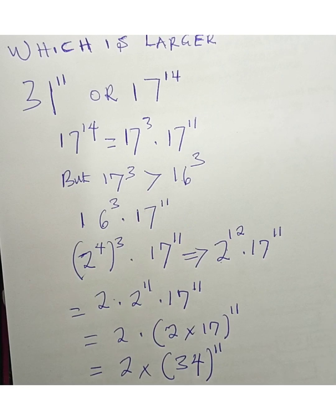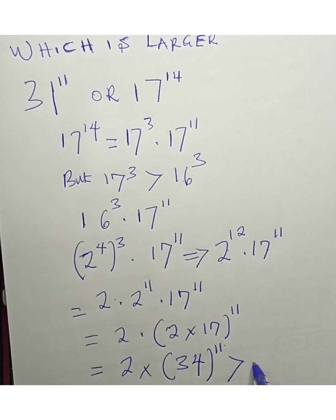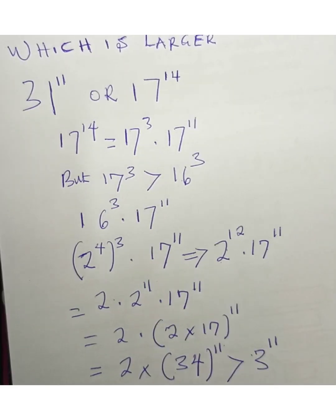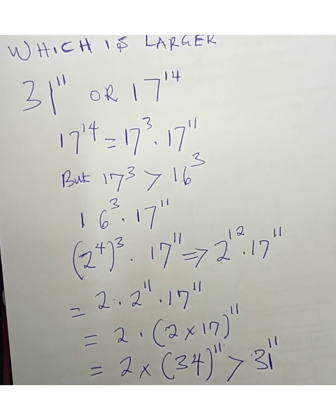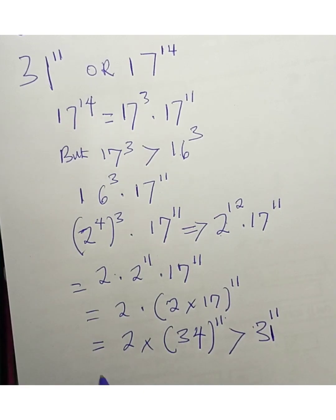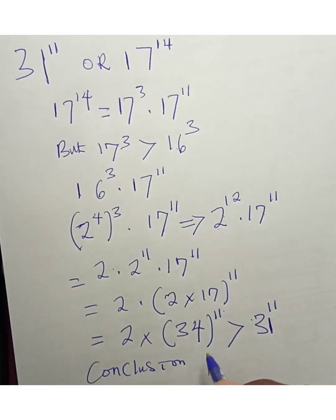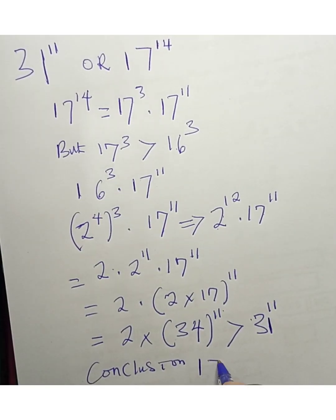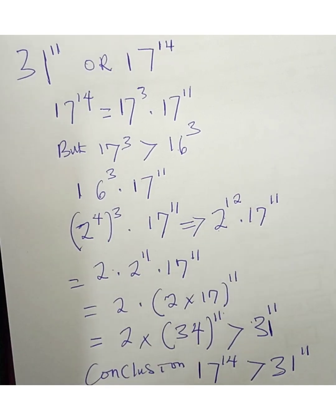Looking at it now, 34 raised to the power of 11 is greater than 31 raised to the power of 11. Since 17 to the power of 14 is greater than 2 times 34 to the power of 11, which is greater than 31 to the power of 11, we conclude that 17 raised to the power of 14 is greater than 31 raised to the power of 11. Thank you for watching, bye bye.